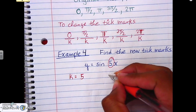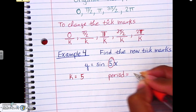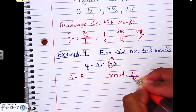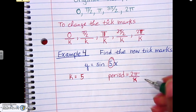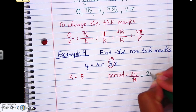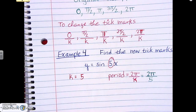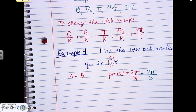Now, what is your period? We do 2π divided by k for the period. We already know k is 5, so the period is 2π/5. This looks familiar from the last part. So we have k and we have the period.